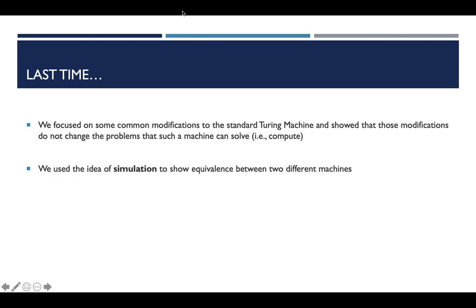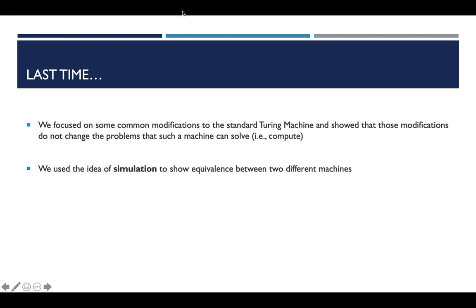One of the ways we used to show that two different machines were equivalent, even though they didn't necessarily have the same set of features, was this idea of simulation. So what we're going to do this time is introduce the idea of a non-deterministic Turing machine, and we're going to use that concept in the next video to derive what a universal Turing machine looks like and what the purpose of such a machine actually is.